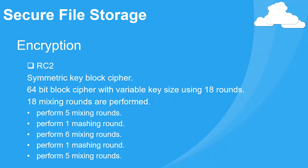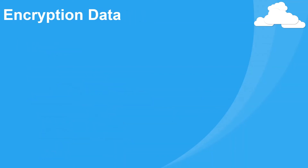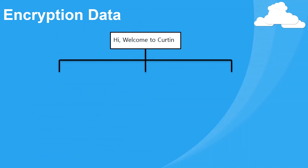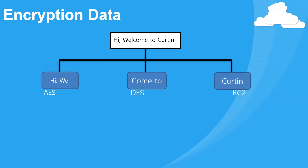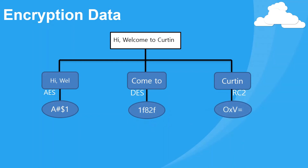For the encryption example: we have a message which is 'Hi, welcome to Curtin.' It will be divided into three different files — AES carrying 'hi well', DES carrying 'come to', and RC2 carrying 'Curtin'. These are the results after the encryption algorithms are run, shown as an example of how the encrypted code looks.